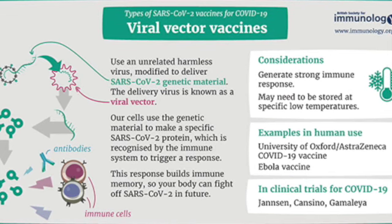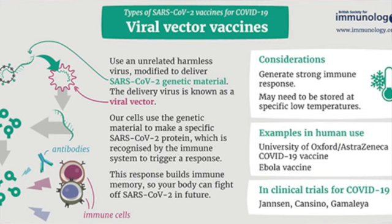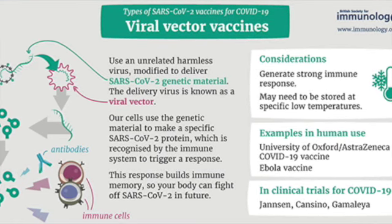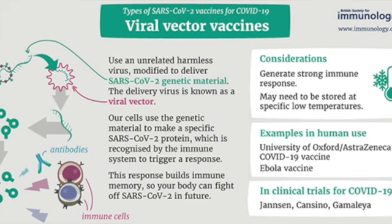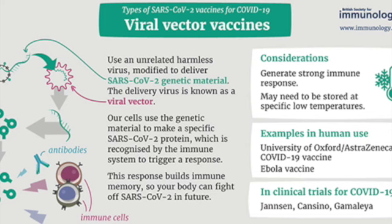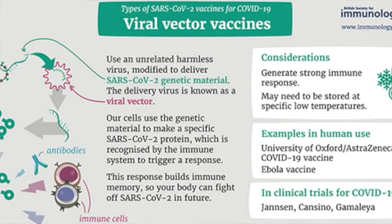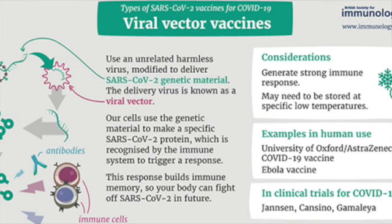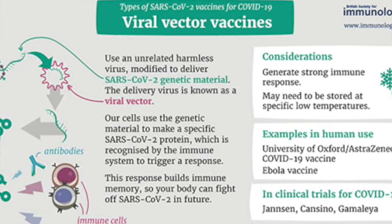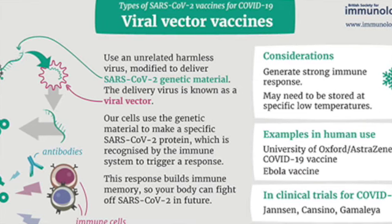Viral vector vaccines use a modified version of a different virus as a vector to deliver protection. Several different viruses have been used as vectors, including influenza, vesicular stomatitis virus (VSV), measles virus, and adenoviruses, which cause the common cold. Adenoviruses are one of the viral vectors used in some COVID-19 vaccines being studied in clinical trials.